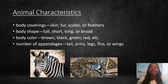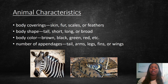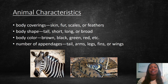The types of characteristics we use to describe animals include body coverings — skin, fur, scales, or feathers — body shape — tall, short, long, or broad — body color — brown, black, green, red, or whatever color — and number of appendages — tail, arm, legs, fins, or wings.